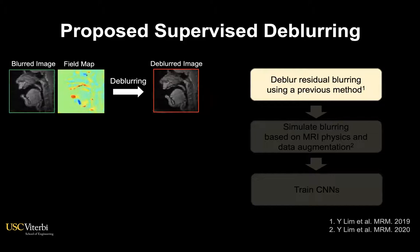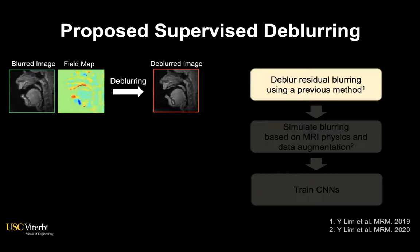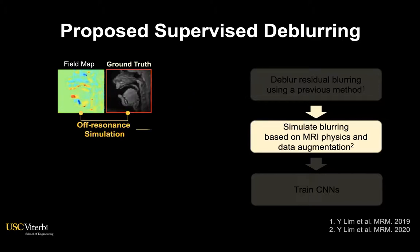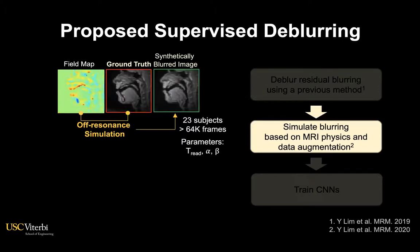The proposed method follows this pipeline. We first generate sharp images using a previously proposed method, then take these sharp images and field maps as our ground truth and generate several blurry images based on MRI physics and data augmentation strategies.